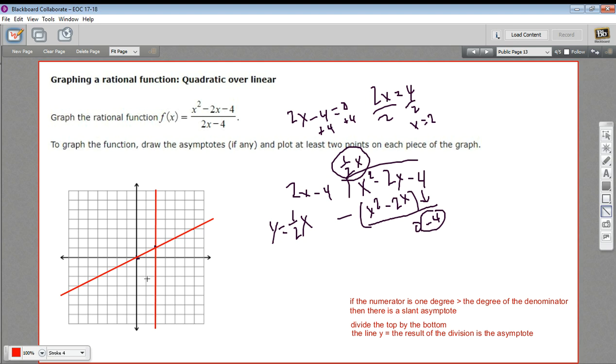Now to figure out where the arms of a rational function are going to lie, we just have to experiment with some points. So let's go ahead and do that. I'm going to start with putting in 0 for x because that's the easiest. That's just going to cancel out all these x terms. I would have negative 4 over negative 4. That would be a positive 1. So the point 0, 1 is on this function. So maybe we'll have an arm here and an arm down here.